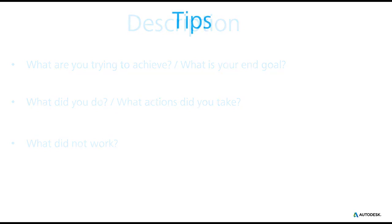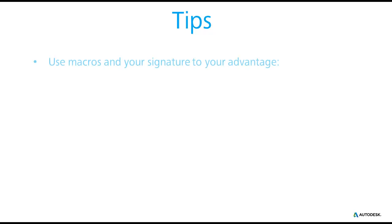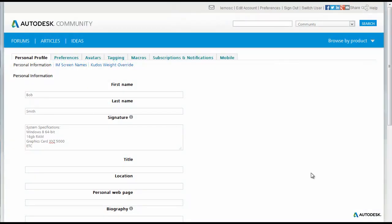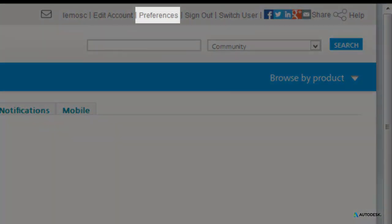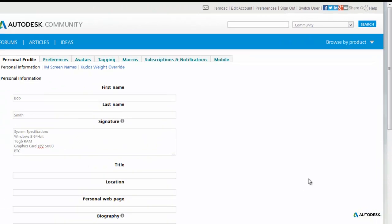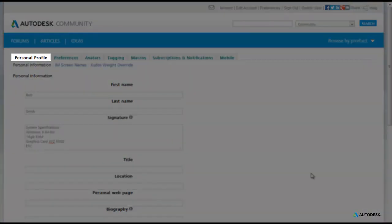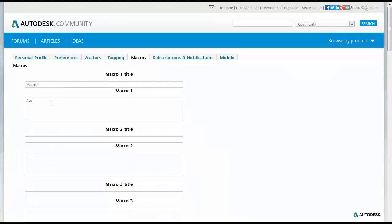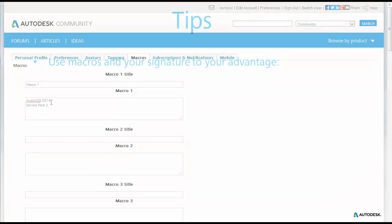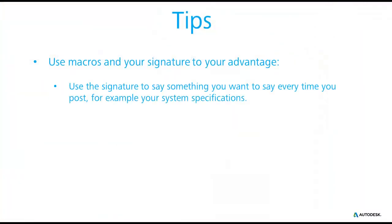Here are some useful tips from our forum experts. Use macros and your signature to your advantage — these can be great time savers. You can set your signature by clicking on preferences at the top right corner of the screen and then on the personal profile tab. Your macros can be found on that same page by clicking on the macros tab. Use the signature to say something that is relevant for all your posts, for example your system specifications.